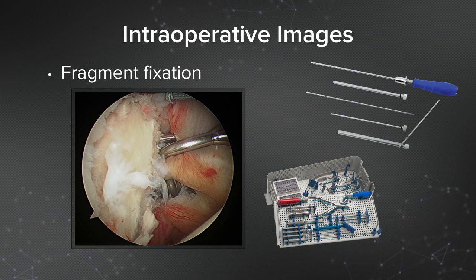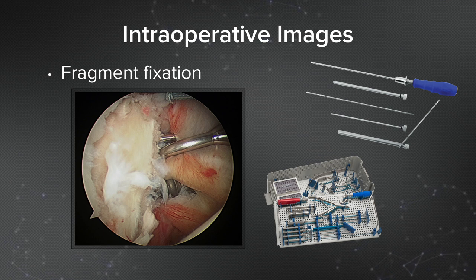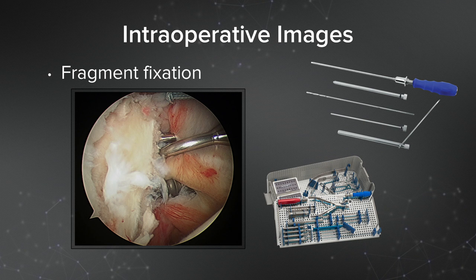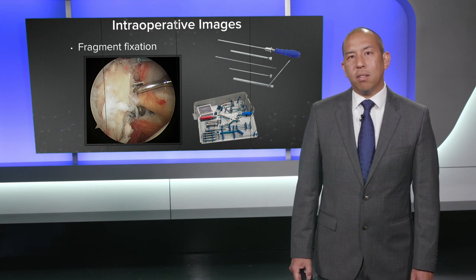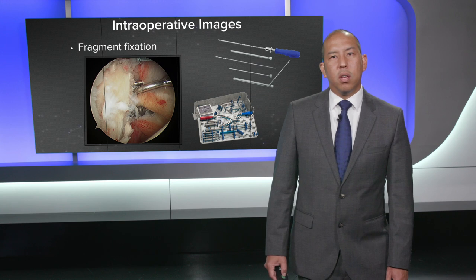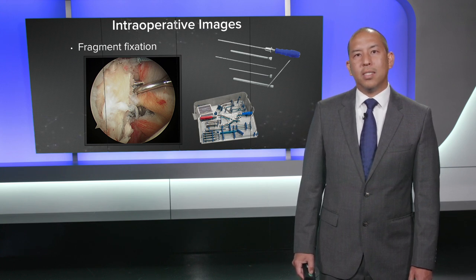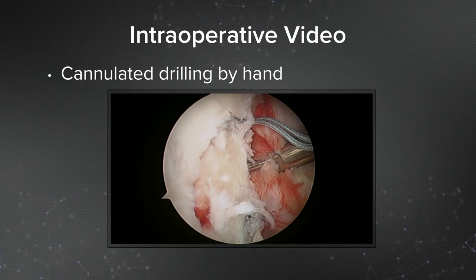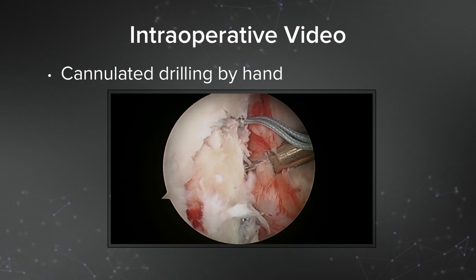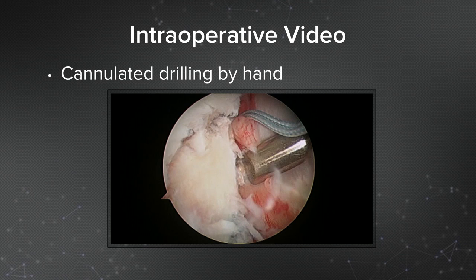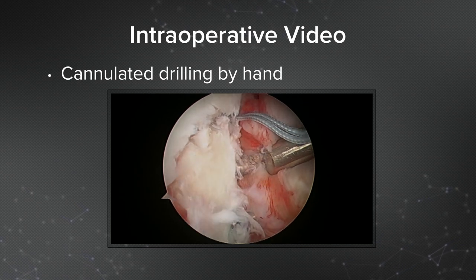Here is the fragment fixation. I place one suture in the anterior-inferior labrum to move the labrum out of the way for better visualization. Then I have the suture lasso in place, have it pinned, and put two K-wires. These portals and K-wires are placed percutaneously using needle localization. The glenoid bone loss set has a very long nesting guide that's perfect for this. Here is video showing cannulated drilling by hand — I have a freer elevator in place to retract soft tissue, and I'm gently drilling over the K-wire so as not to shift or disrupt the fracture.